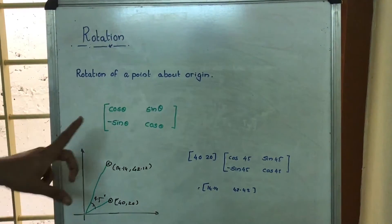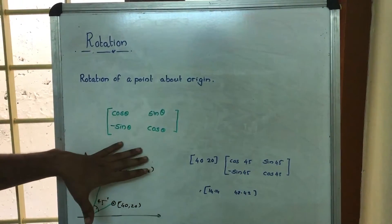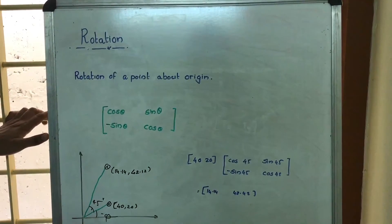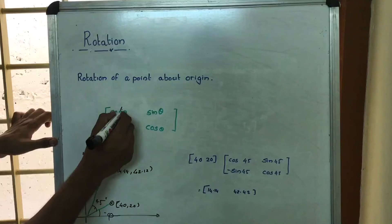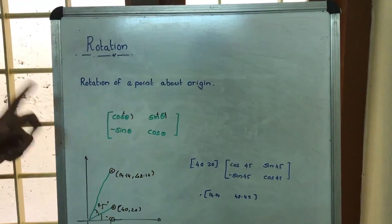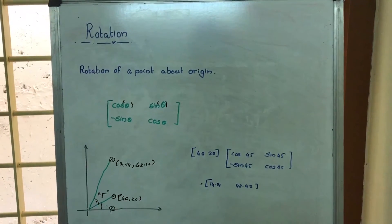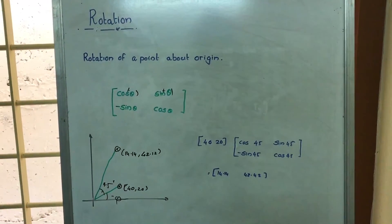If we want to rotate a point by an angle θ in the anticlockwise direction, multiply with this matrix. If we want to rotate it by an angle -θ, then put a minus there. So we multiply with cos(-θ), sin(-θ), -sin(-θ), cos(-θ). This is how we rotate a point.